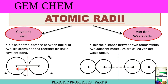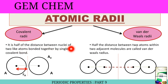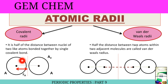We will now see atomic radii in detail. Atomic radii can be subdivided into two parts: covalent radii and van der Waals radii. Covalent radii is the half of the distance between the nuclei of two like atoms bonded together by a single covalent bond — importantly, they must be bonded by a single covalent bond. The distance from the nucleus to the average middle portion of this bond is the radius, denoted Ra.